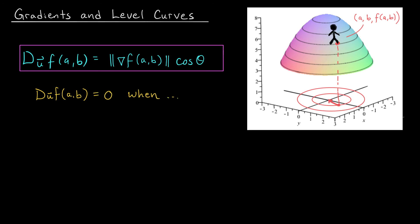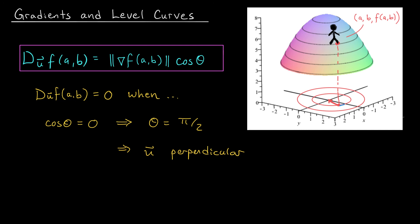We have one more hiker, Bland Betty. Betty doesn't want to go up or down — she's happy at her current elevation. So if Betty is standing at point ab, in which directions can she move to maintain her current altitude? She's looking for directions in which the directional derivative equals zero. Going back to our formula: the directional derivative is the norm of the gradient, which we can't change, times cos theta, which we can change. To make the directional derivative zero, we need cos theta equal to zero, which occurs when theta equals pi over two. So Betty should move in a direction perpendicular to the gradient vector.